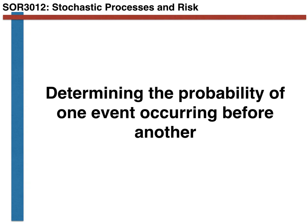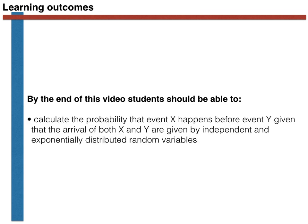Hello, in this video we are going to look at a classic random variable problem. The learning outcome for this video is to learn how to solve this particular problem, which involves calculating the probability that event X happens before event Y, if both of these events occur at random times.